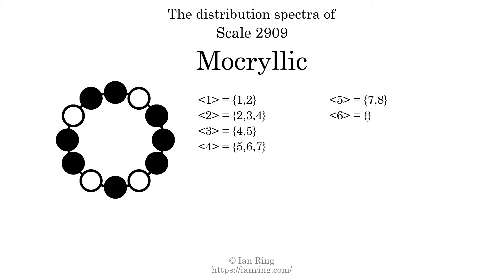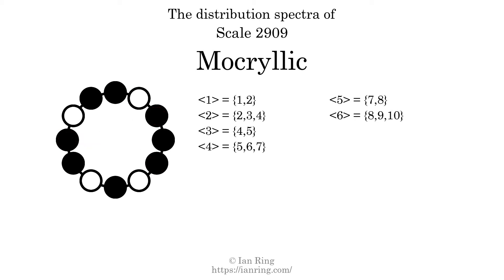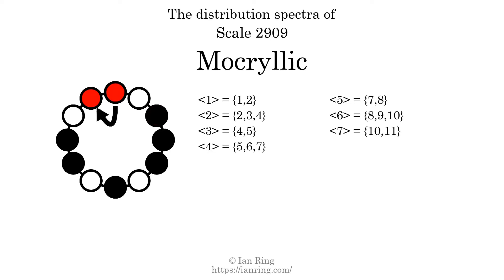The generic interval of six scale steps comes in three different specific interval sizes: eight semitones, nine semitones, and ten semitones. The spectrum width of this generic interval is two. The generic interval of seven scale steps comes in two different specific interval sizes: ten semitones and eleven semitones. The spectrum width of this generic interval is one. The spectrum variation is the sum of all the widths divided by the number of tones. The spectrum variation of this scale is 1.25.